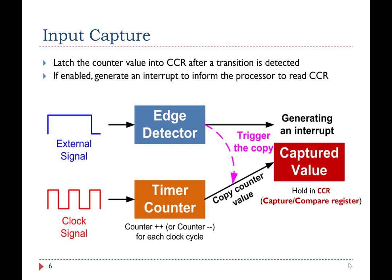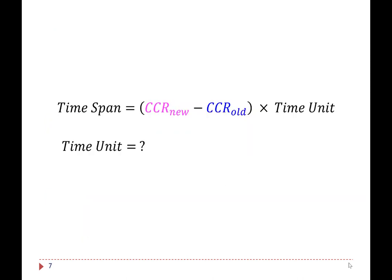When a capture takes place, hardware automatically copies the value of the timer counter into the CCR register. After obtaining two CCR values, we can use this equation to calculate the time span.